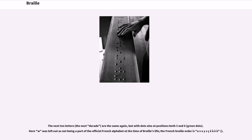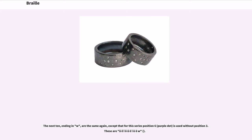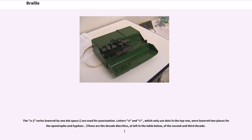The next ten letters, ending in W, are the same again, except that for this series position 6 is used without position 3. The A-J series lowered by one dot space are used for punctuation. Letters A and C, which only use dots in the top row, were lowered two places for apostrophe and hyphen. These are the decade diacritics of the second and third decade.